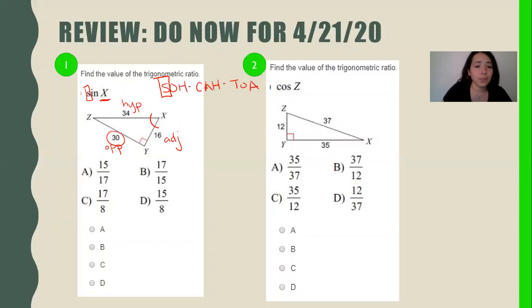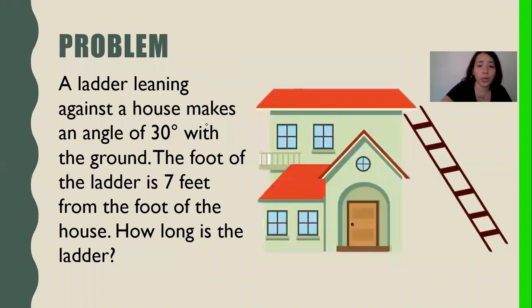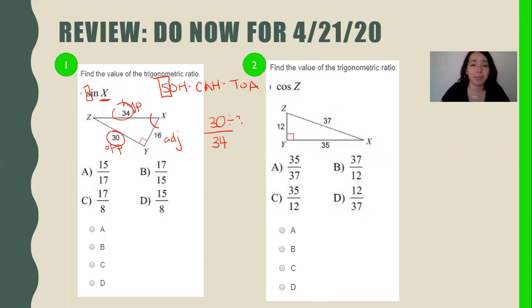To find sine, notice sine starts with an S. This starts with an S. We need our opposite and our hypotenuse. What's my opposite? 30. Over what's my hypotenuse? 34. But notice that is not an option. We have to simplify. Divide by two because they're even numbers. 30 divided by two is 15. 34 divided by two is 17. Now is my answer there? Yes, it is listed under A.